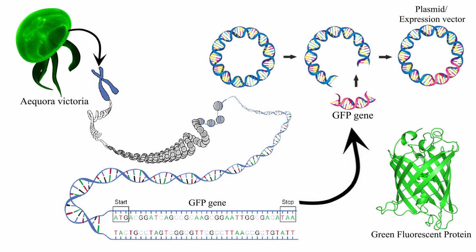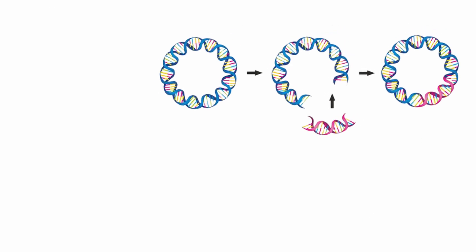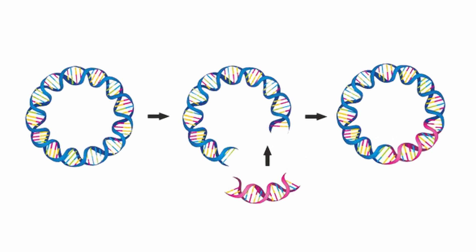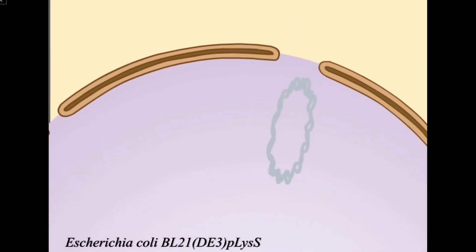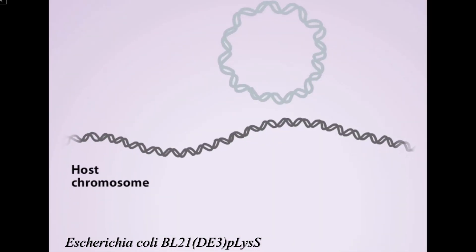After a few weeks we managed to isolate our plasmid vectors with the gene. How we managed to incorporate the gene into the vector is a subject for another video. This vector is later transformed into a special E. coli host that is easy to transform and can express the inserted gene.